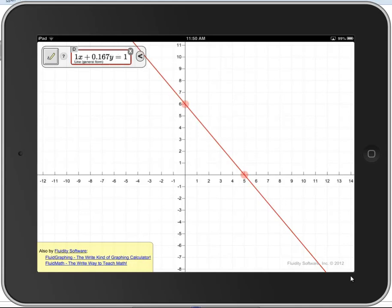If I tap on it again, I can see the general form for this line. And here's point-slope form. And finally, here's intercept form.